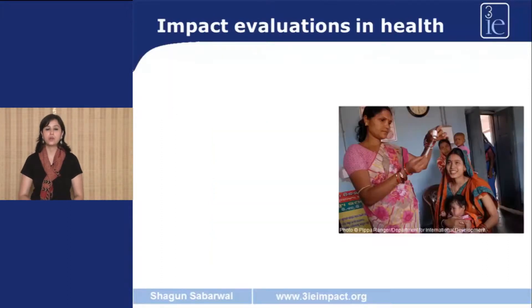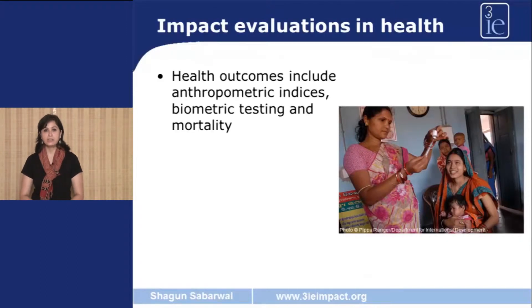Moving on to the next topic of impact evaluations in health, I would like to highlight the measurement aspects. Health outcomes can be measured in a number of different ways. Some of the commonly used ways include anthropometric measures such as height, weight, and upper arm circumference. The second important way is blood testing or other biometric methods, such as HIV testing. And finally, you also have mortality, which can be measured as maternal mortality or child mortality.